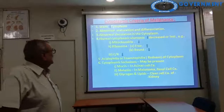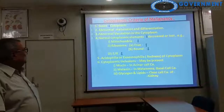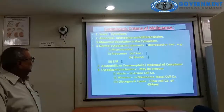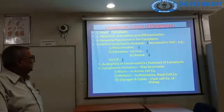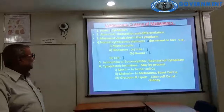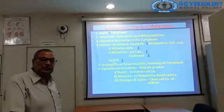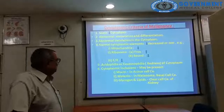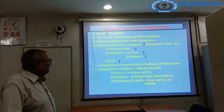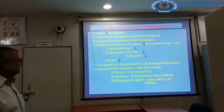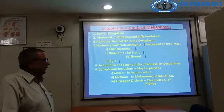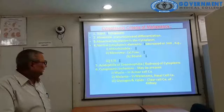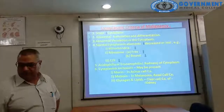Cytoplasmic criteria of malignancy: scant cytoplasm; abnormal maturation and differentiation; abnormal vacuolation in the cytoplasm; normal cytoplasmic elements decreased or lost — mitochondria decreased in number, free ribosomes increased but bound ribosomes reduced, endoplasmic reticulum decreased; acidophilia of cytoplasm; cytoplasmic inclusions may be present — mucin in acinar cell carcinoma, melanin in melanoma, and glycogen or lipids in clear cell carcinoma of the kidney.